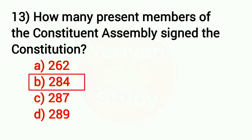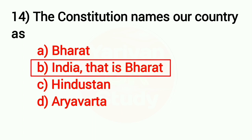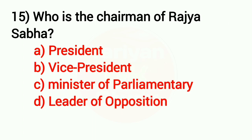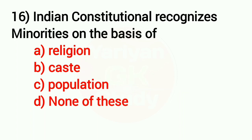Question number 14: The Constitution names our country as? Answer: Option B — India, that is Bharat. Question number 15: Who is the chairman of the Rajya Sabha? Answer: Option B — the Vice President. Question number 16: The Indian Constitution recognizes minorities on the basis of? Answer: Option A — religion.